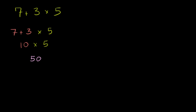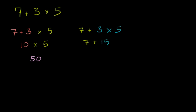Another way you could interpret it: you say, oh, I like to do multiplication before I do addition. So you might interpret it as 7 plus, and you do the 3 times 5 first. That gives you 7 plus 15, which is 22.